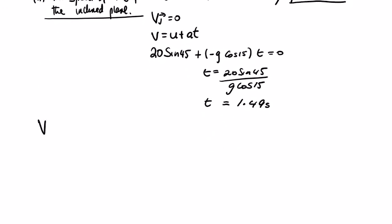And then we use the velocity in the I direction. Again, we're going to use U plus AT. So the initial velocity was 20, but because of the angle that it was projected at which was 45 degrees...